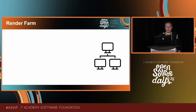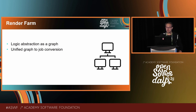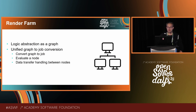By using Flowpipe as a node-based dependency framework, it is possible to modularize workflows for better control and reusability, providing a unified way to convert graphs and their nodes to farm jobs or tasks. This provides a unified render farm abstraction split into three parts: the graph-to-job and task dependency conversion, the evaluation of nodes on the farm, and the data transfer handling between nodes on the farm. Using the node's metadata, it is possible to define and store any farm-specific settings used during the graph-to-job farm conversion setup.